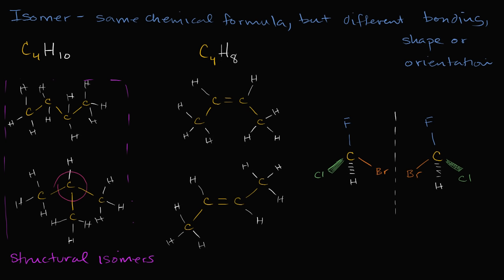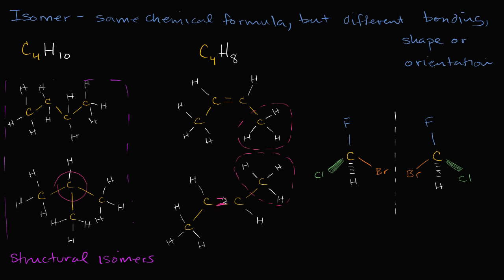But you might notice a difference. On the right-hand side, this CH3 is on the bottom right, while over here it's on the top right. You might say, what's the big deal? These molecules are all moving around, maybe rotating with respect to each other — this thing could have rotated down. If this was a single bond, a single bond would allow for that type of rotation around the bond. But a double bond does not allow that rotation. So this fixes these two things in place, and because of that, these are actually two different molecules.